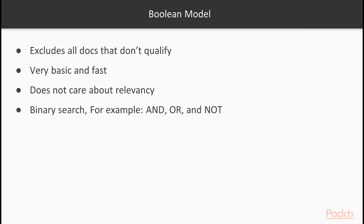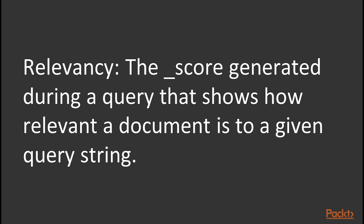Think of the Boolean model as a binary search where the AND, OR, and NOT conditions are applied in the query. Relevancy, on the other hand, is the score generated during a query for each document match returned. It helps to think of relevancy score as determining how relevant a given document is to a query. Results in Elasticsearch are returned in descending order based on the relevancy score of each document. Also note that the score is a floating point number, such as 0.54.